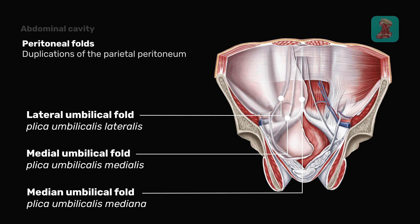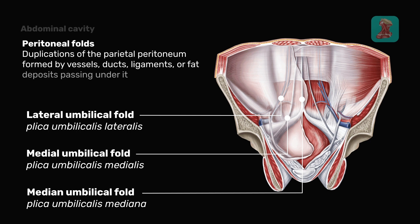Peritoneal folds are duplications of the parietal peritoneum formed by vessels, ducts, ligaments, or fat deposits passing under it.